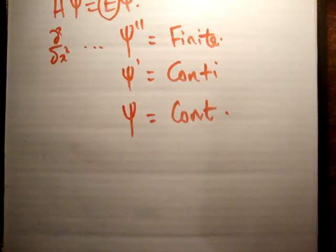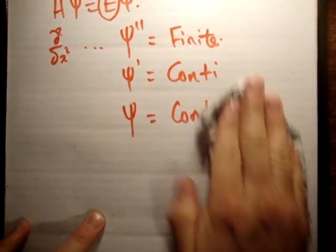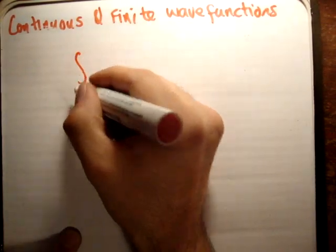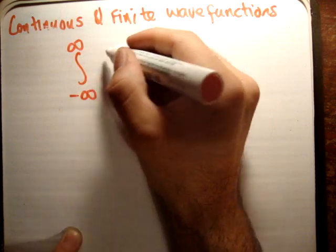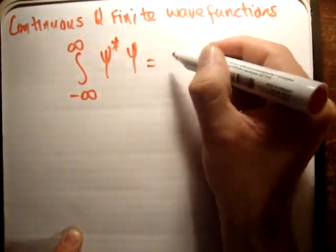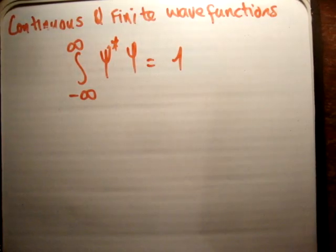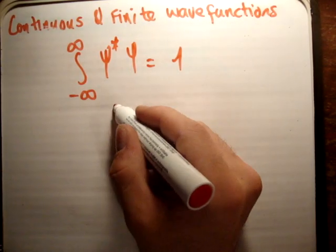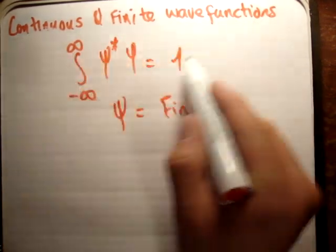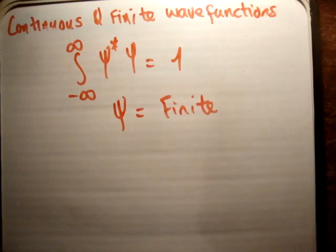Finally, if we look at the probability of the wave function existing — we know the probability equals one, calculated by the complex conjugate times the wave function. So the wave function must exist somewhere, meaning the wave function must be finite. There's no way you could normalize it and get it equal to one if the wave function or its complex conjugate was infinite.